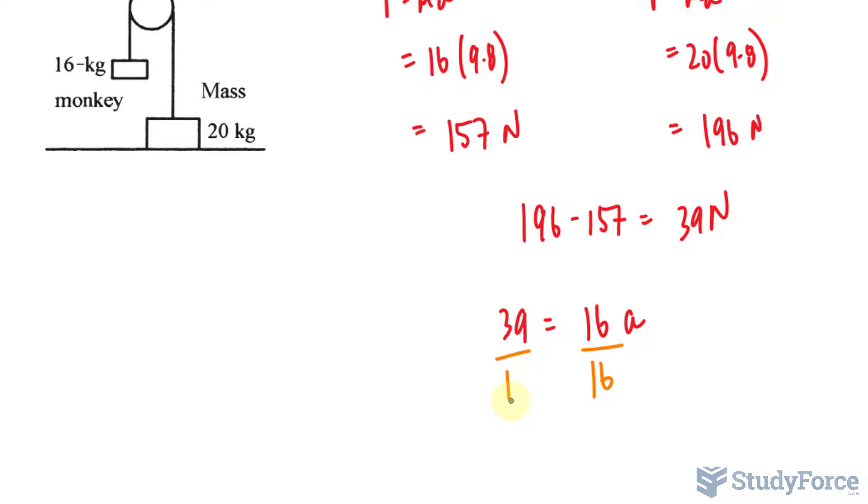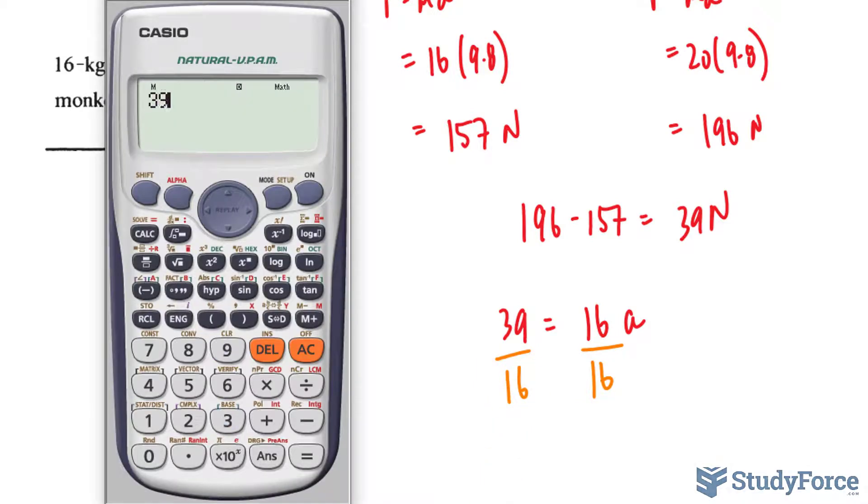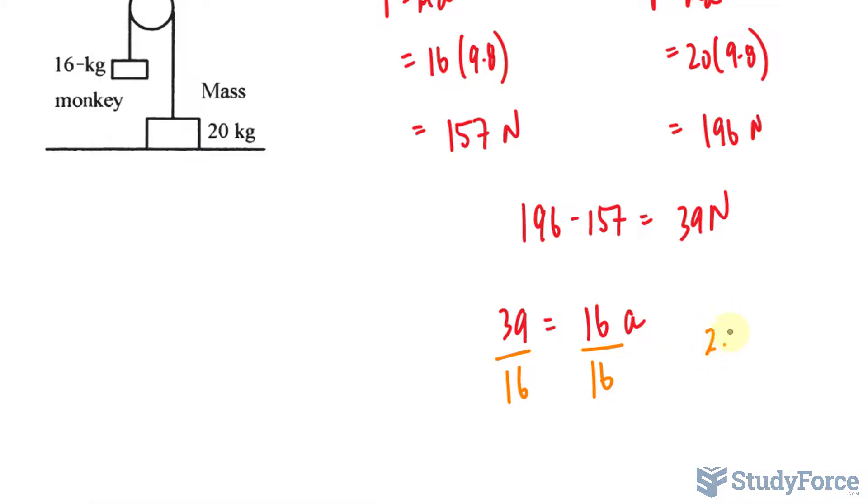So 39 divided by 16 makes 2.43, or simply 2.4 meters per second squared.